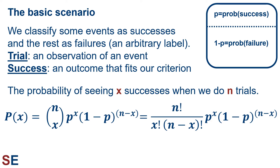We have a sample space, or a set of possible results from observations, and we classify some events in that sample space as successes and the rest of them as failures. This is just an arbitrary label — it doesn't indicate what we want or don't want. We're thinking about results when we do a bunch of trials, each of which is an observation of an event, and we're interested in whether each trial is a success or not.